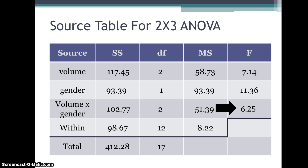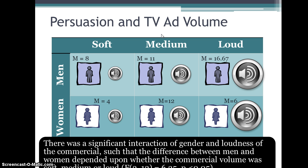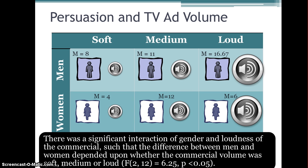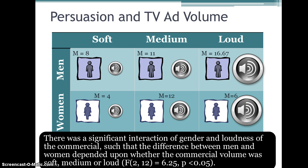Now the question becomes, okay, since we have this significant interaction, where exactly is the difference? Like, you know, we need a post-hoc analysis. Now certainly that would be beyond the scope of what you would be doing for this course. We would do what are called cell means comparisons. So we can say, let's look at the means in each of these six different cells and we could evaluate where those differences are and actually do tests to see which ones of these cells were responsible for the differences we found. But what we can say and what we can conclude here is that there was a significant interaction of gender and loudness of the commercial such that the differences between men and women depended upon whether the commercial volume was soft, medium, or loud.